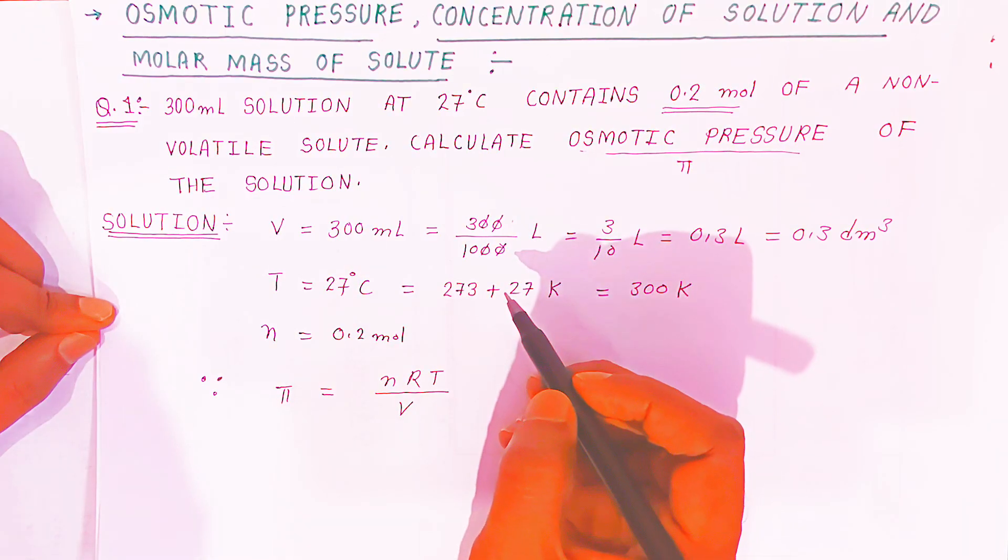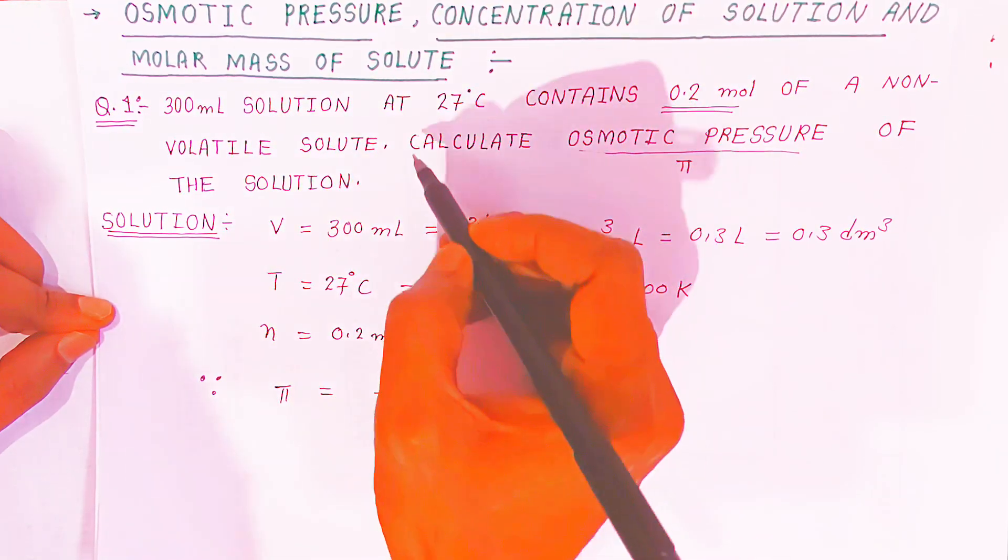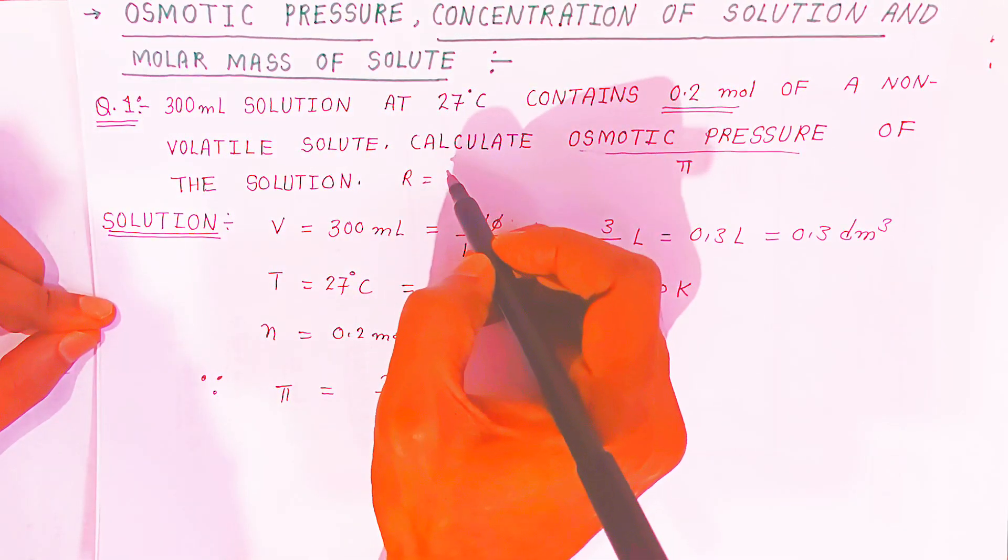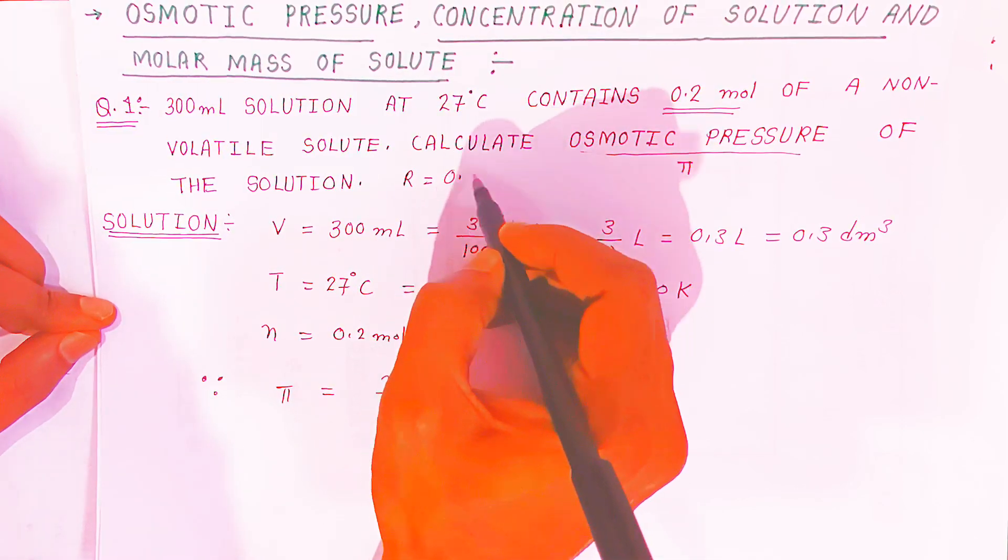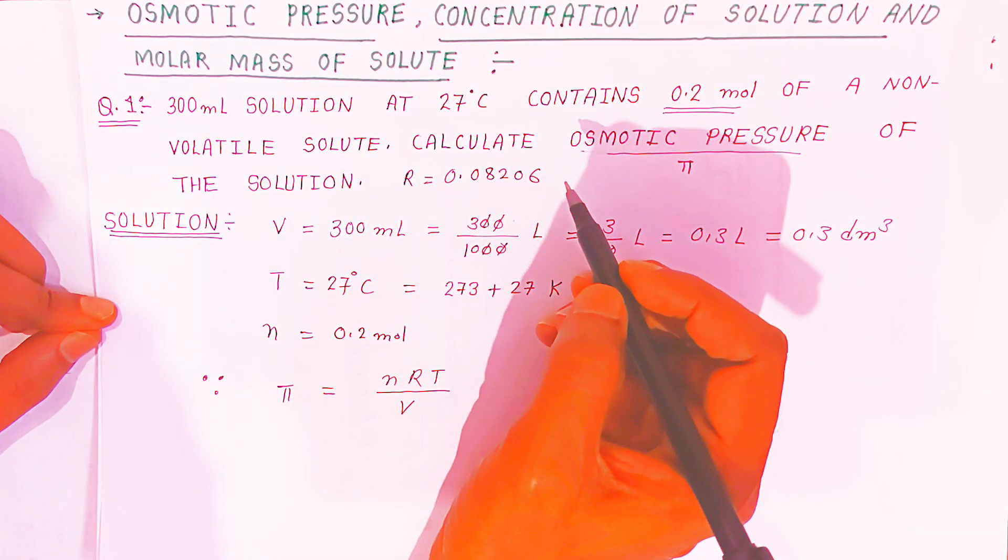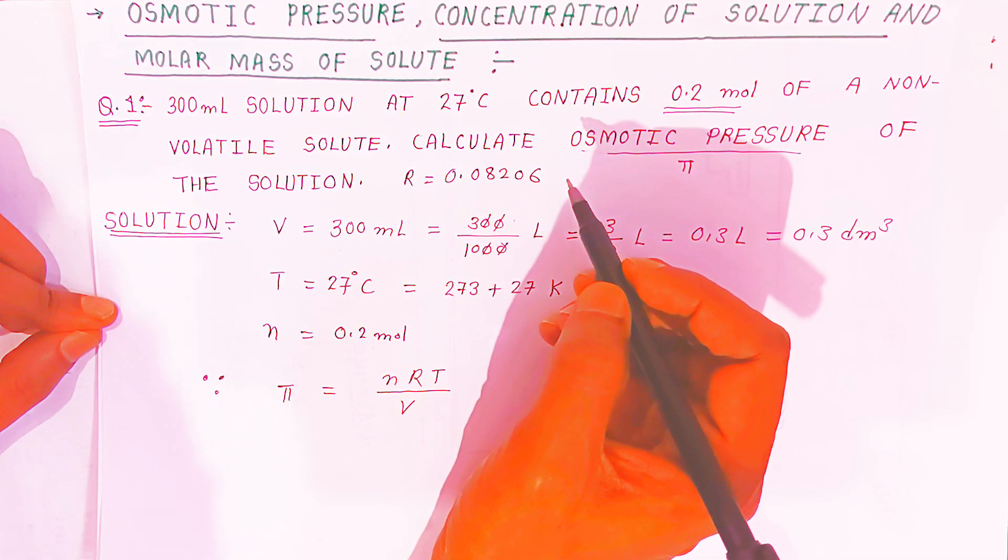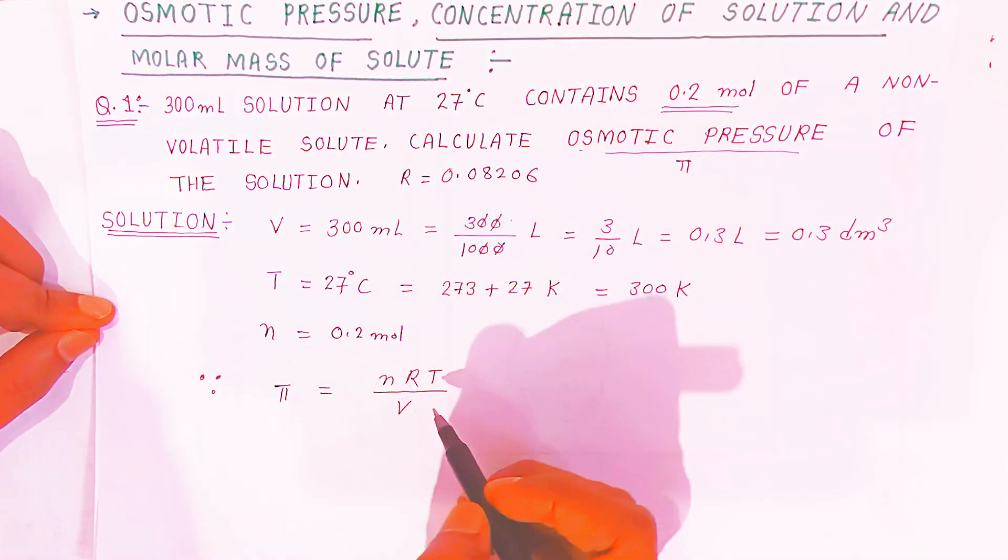Where R is the universal gas constant. The value of R will be given to you. This is the value of R, 0.08206, that is called the universal gas constant. Now this value you have to put here.